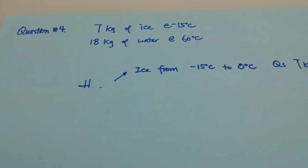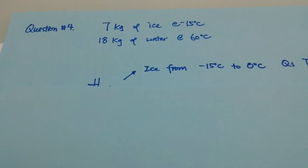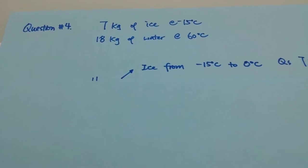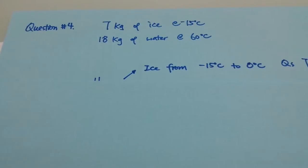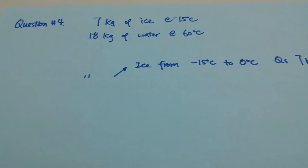We have ice at minus 15 degrees Celsius and water at 60 degrees Celsius. Let's look at what is the enthalpy in our ice. There are actually two steps.